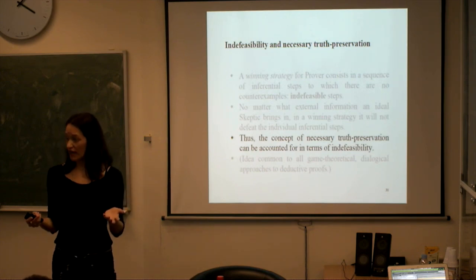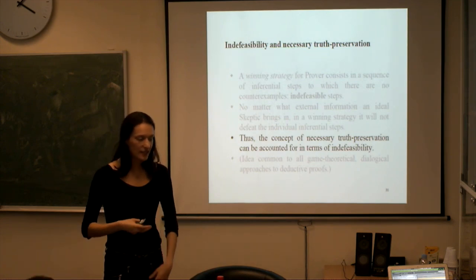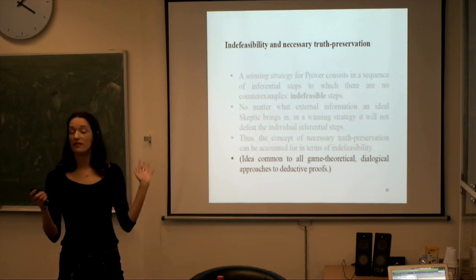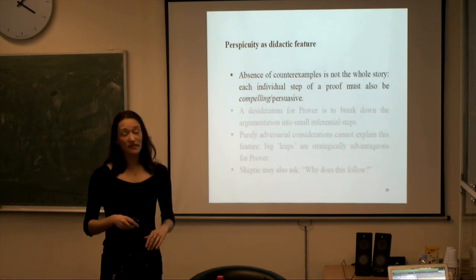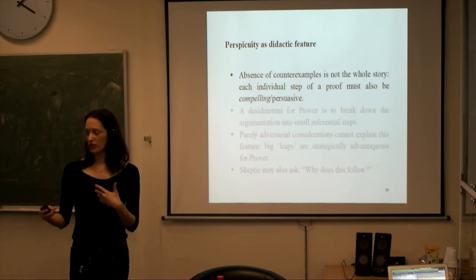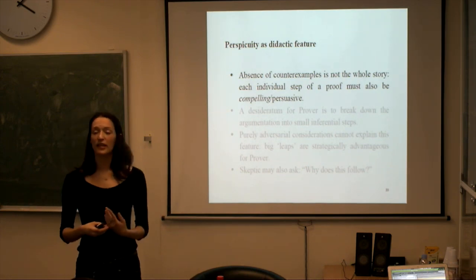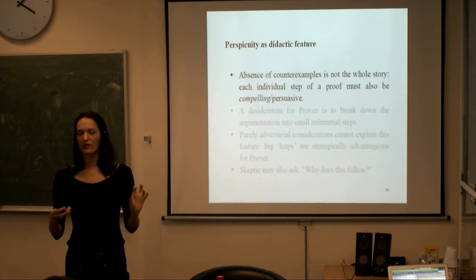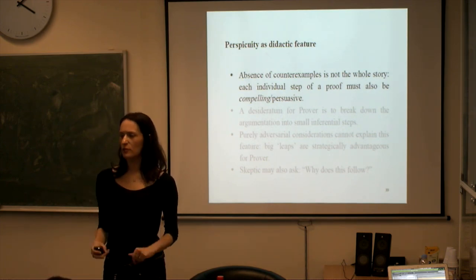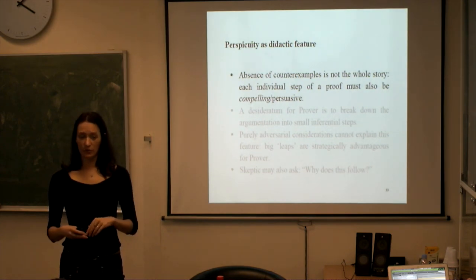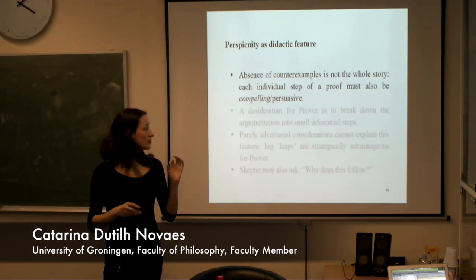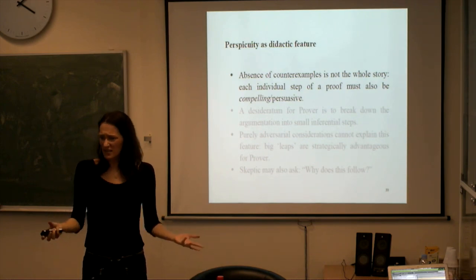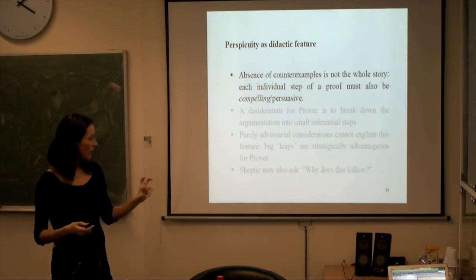The idea that necessary truth preservation can be accounted for in terms of indefeasibility in a winning strategy — this has been in the air for decades, in the work of Lorenzen, Hintikka, and others. What I'm making explicit, which I think these accounts haven't made sufficiently explicit, is the importance of perspicuity for a mathematical proof — what I interpret as a didactic feature. Why must proofs be perspicuous, as Wittgenstein uses the term? Absence of counterexamples is not the whole story — there is also the desideratum that each step be individually clear.